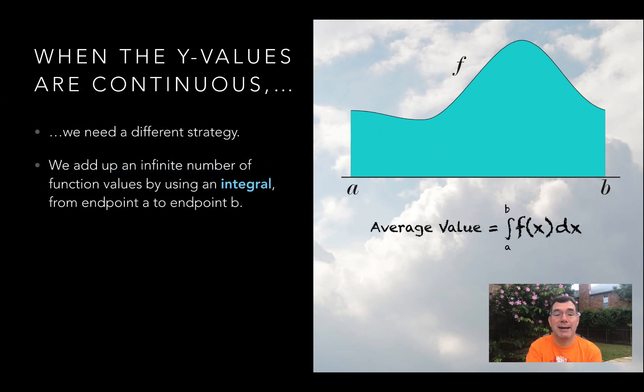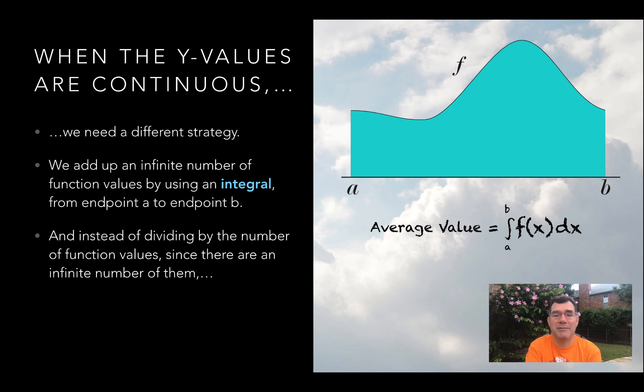Instead of adding up an infinite number of function values, we find the integral, because that's what an integral does. We find the integral from endpoint A to endpoint B, and then instead of dividing by how many numbers there are, we divide by the width of the interval, B minus A.